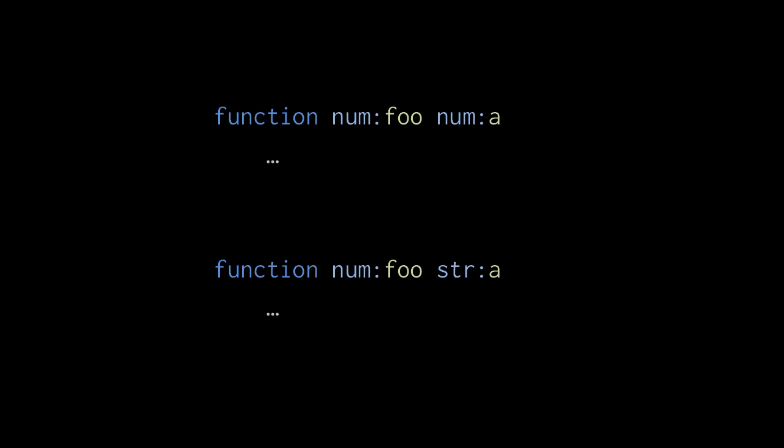The obstacle to polymorphism in static languages, of course, is that each function parameter must have a single declared type. To allow for polymorphism, then, a static language must allow us to create multiple versions of the same function.